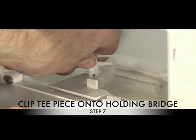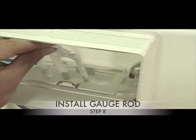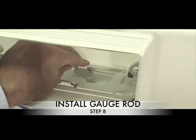Clip the T-piece into the holding bridge. Install the gauge rod by pressing on top.